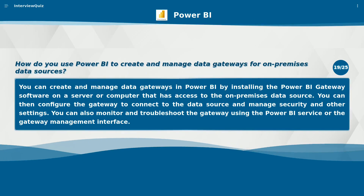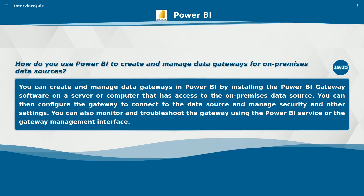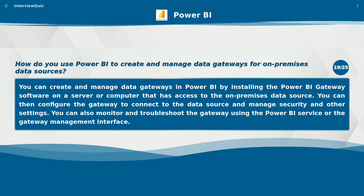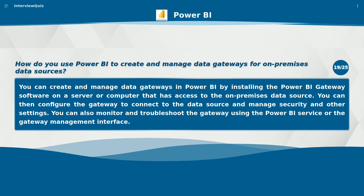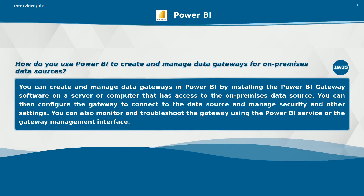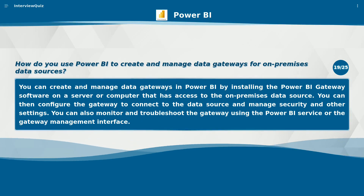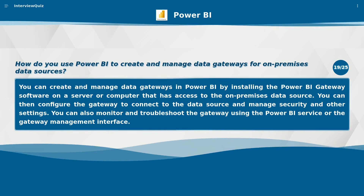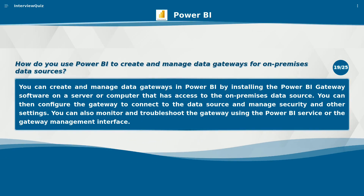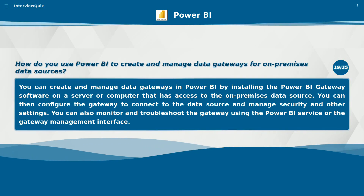How do you use Power BI to create and manage data gateways for on-premises data sources? You can create and manage data gateways in Power BI by installing the Power BI gateway software on a server or computer that has access to the on-premises data source. You can then configure the gateway to connect to the data source and manage security and other settings. You can also monitor and troubleshoot the gateway using the Power BI service or the gateway management interface.